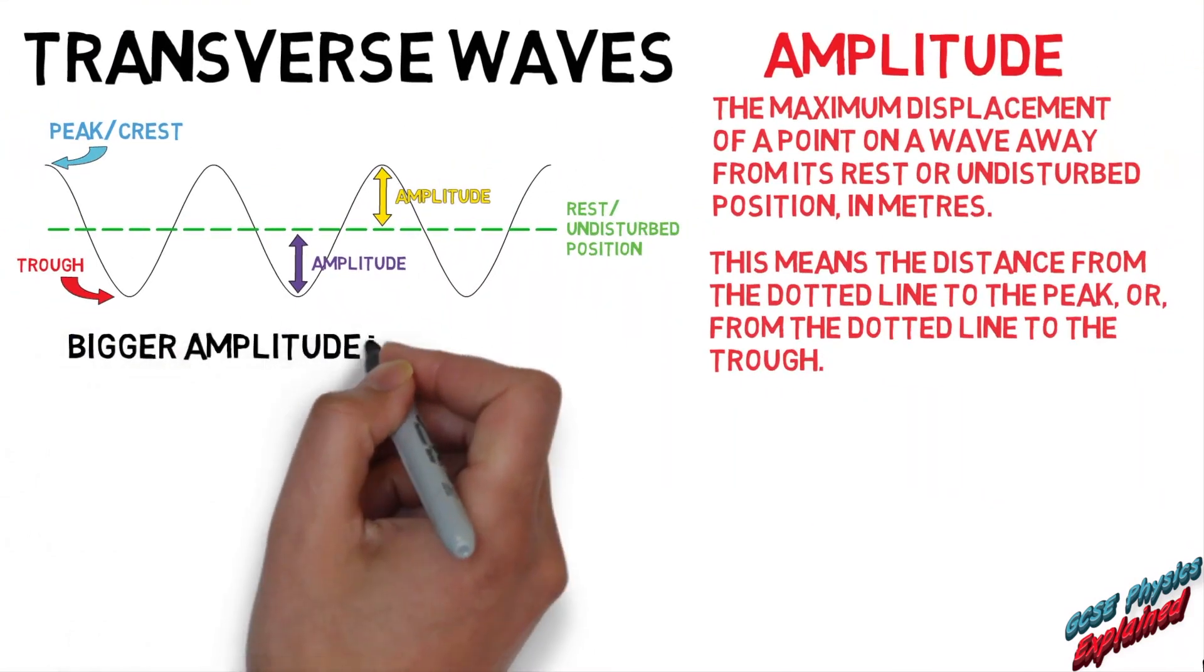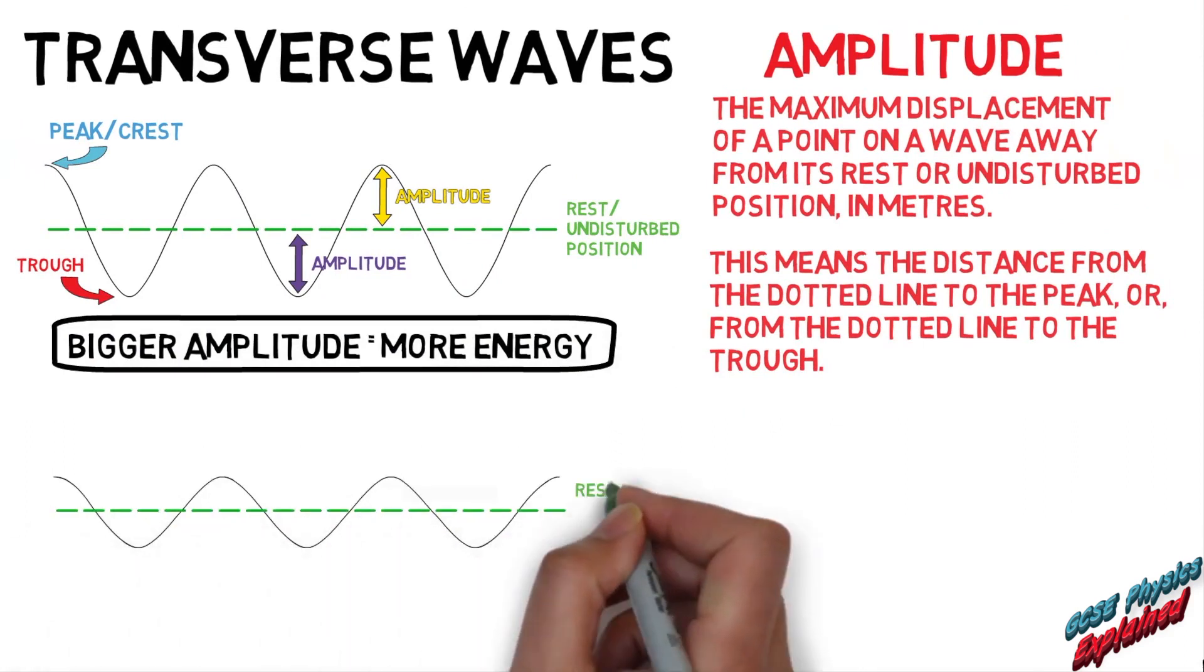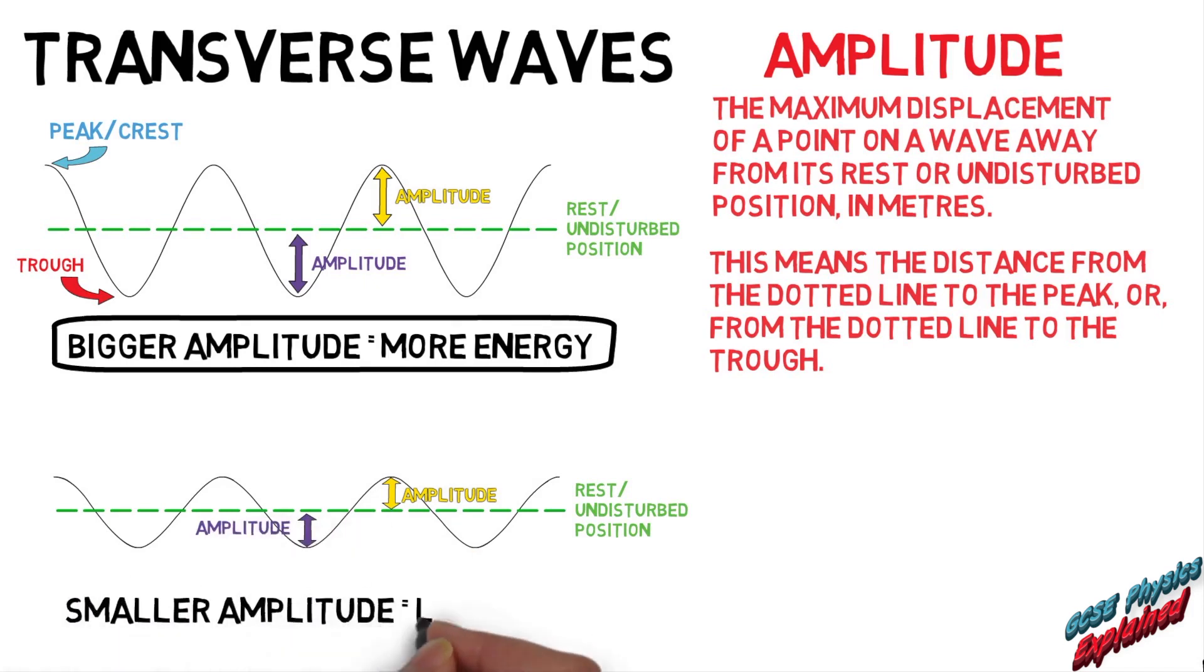Bigger amplitude equals more energy. Smaller amplitude equals less energy.